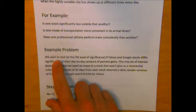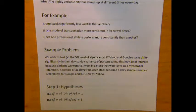Let's look at an example problem. We wish to test at the 5% level of significance if Yahoo and Google stocks differ significantly in their day-to-day variance of percent gains. This may be of interest because perhaps we want to invest in a stock that won't give us a myocardial infarction. A sample of 31 days from each stock returned a daily sample variance of 0.0087% squared for Google and 0.0132% squared for Yahoo.